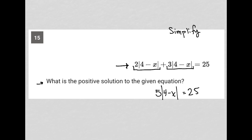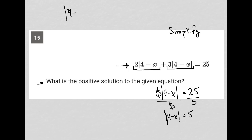I can divide both sides of this equation by five in an effort to isolate my absolute value. So I'm left with the absolute value of four minus x is equal to five.